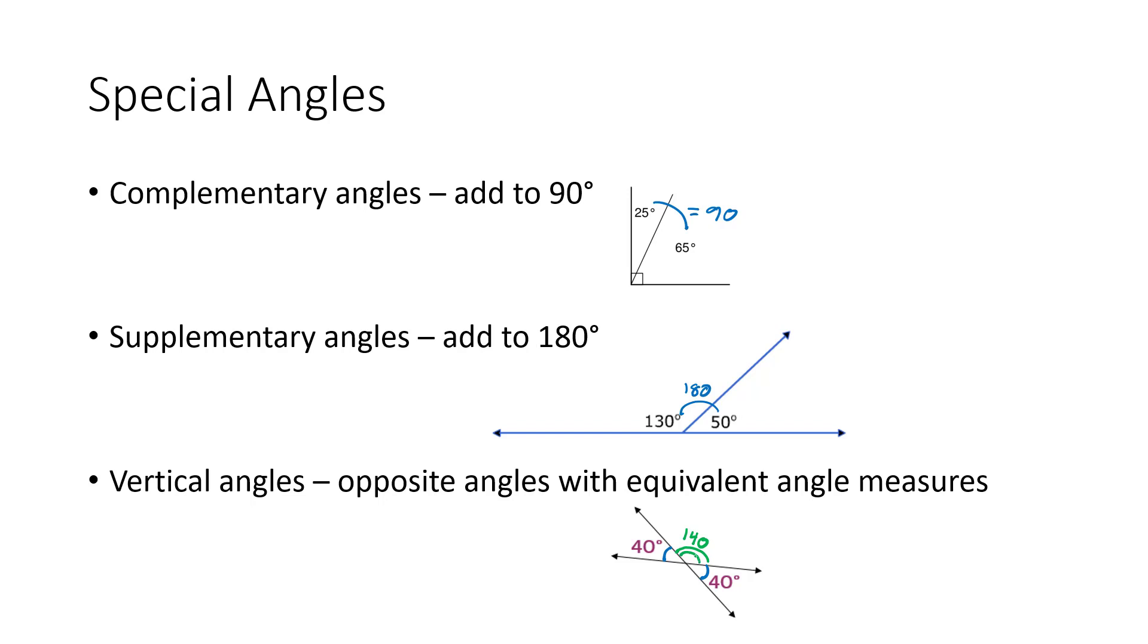And that angle then is going to be congruent to the vertical angle across from it. Congruent or the same measure is also going to be a 140 degree angle. So vertical angles across from each other have the same measure.